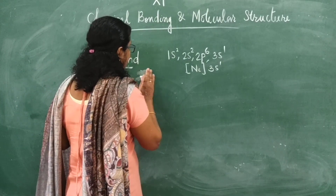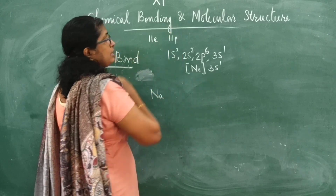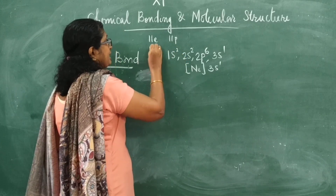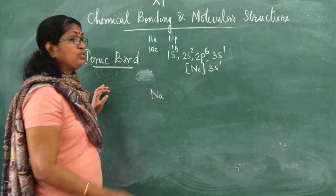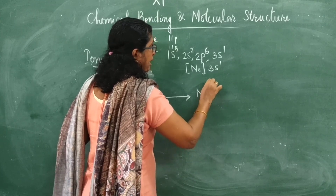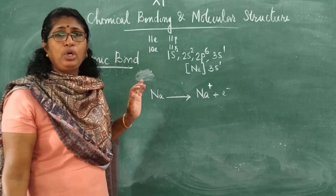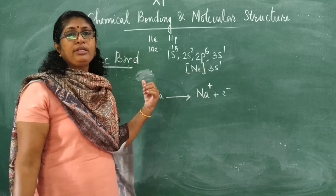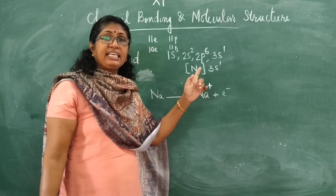When sodium loses one electron, it has 10 electrons and 11 protons — meaning 1 proton is in excess, so it will have a positive charge and become a sodium cation (Na⁺). Sodium will always try to lose one electron because by doing so it attains the nearest inert gas configuration.